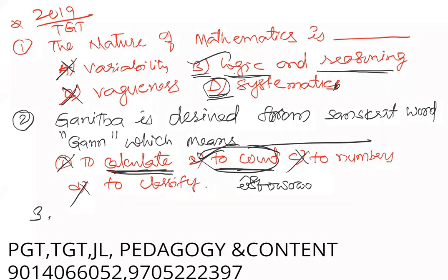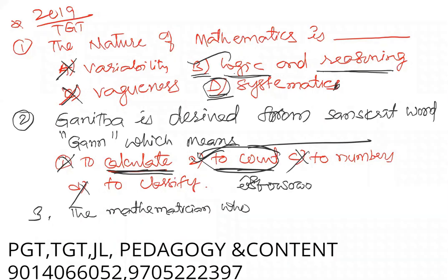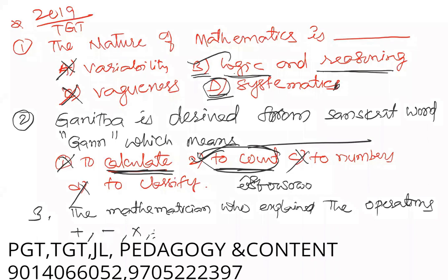The mathematician who explained the operations — plus addition, subtraction, multiplication, division — with zero. Zero operations.